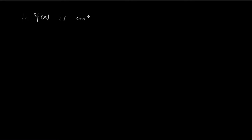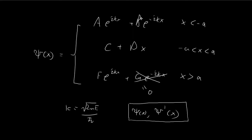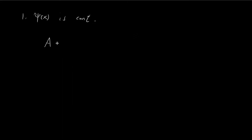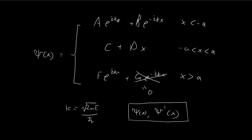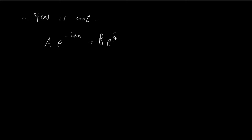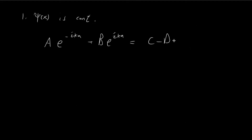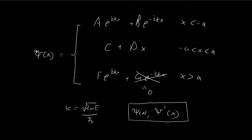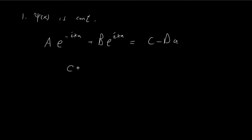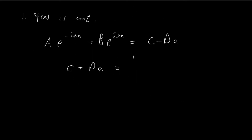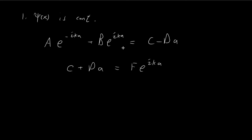From the continuity of ψ(x) at x = −a, we get: A·e^(−ika) + B·e^(ika) = C − Da. At x = +a, continuity gives: C + Da = F·e^(ika). These two equations relate the constants across the boundaries.